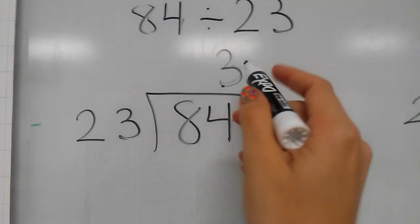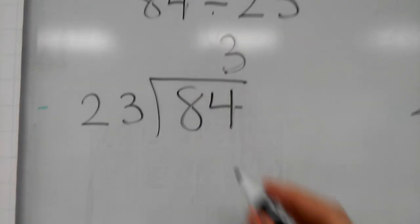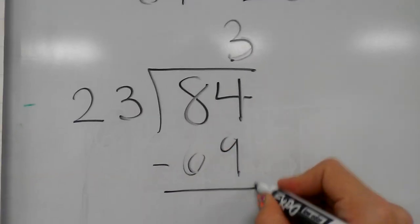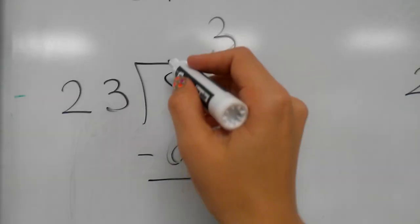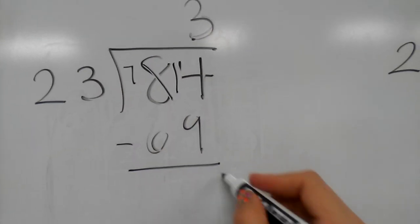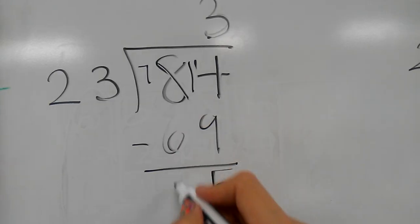So then you would multiply. 3 times 23 is 69. And then I would subtract. So I need to regroup here. 14 minus 9 is 5. 7 minus 6 is 1.